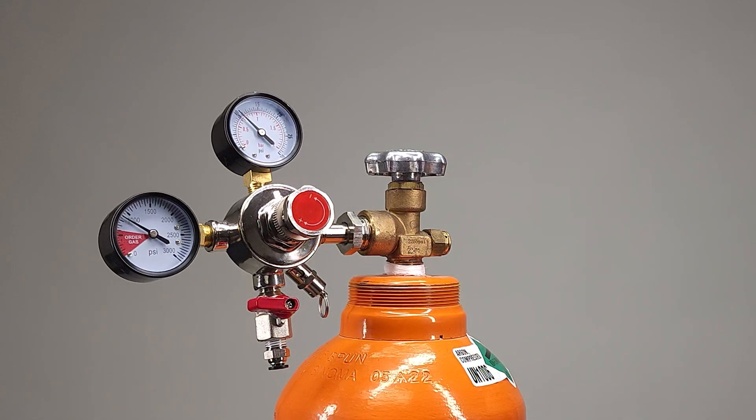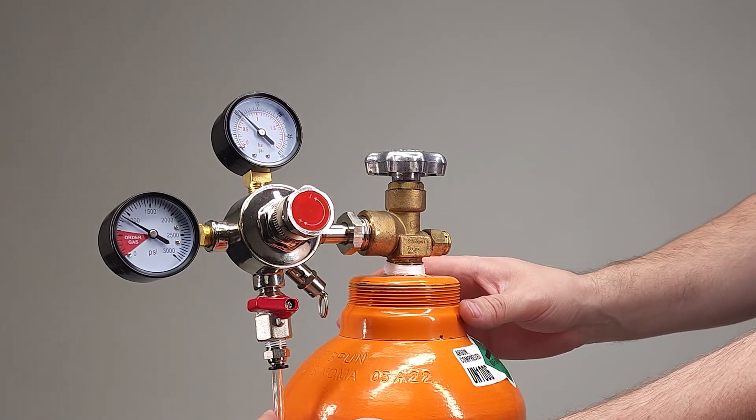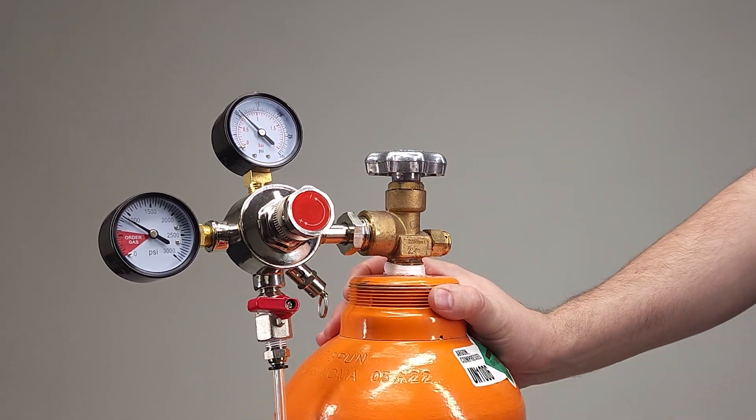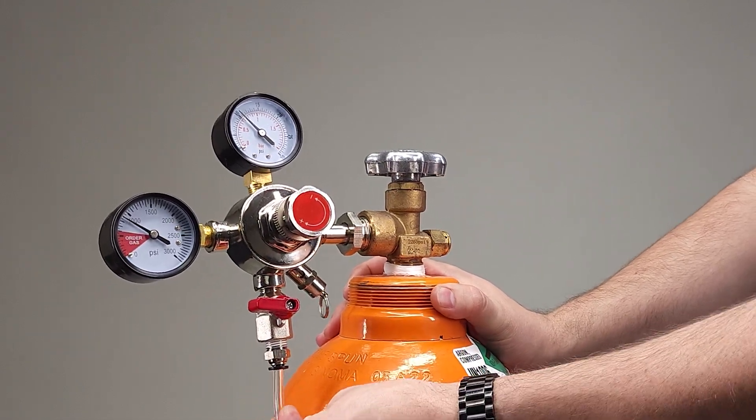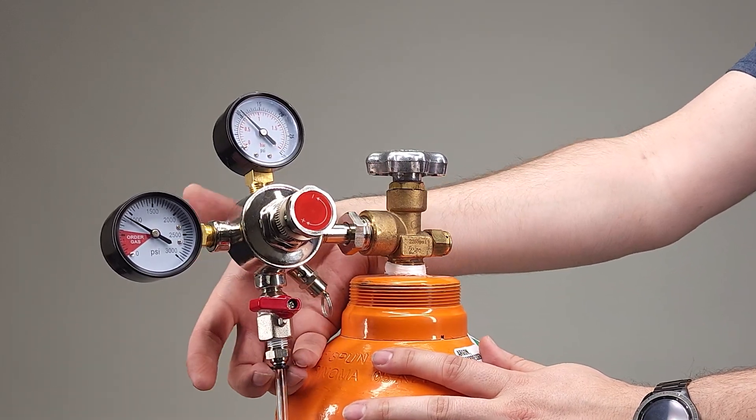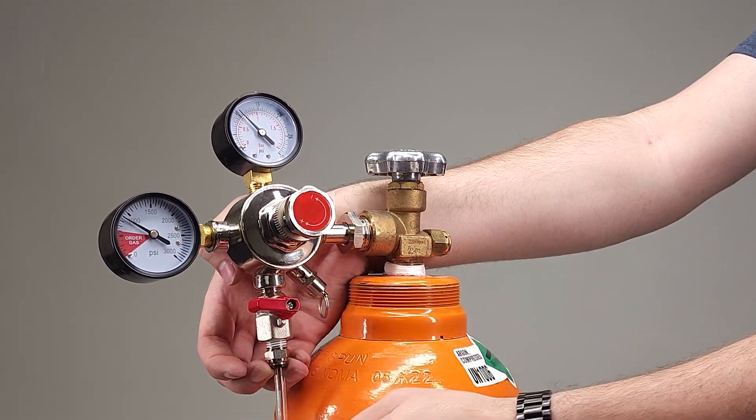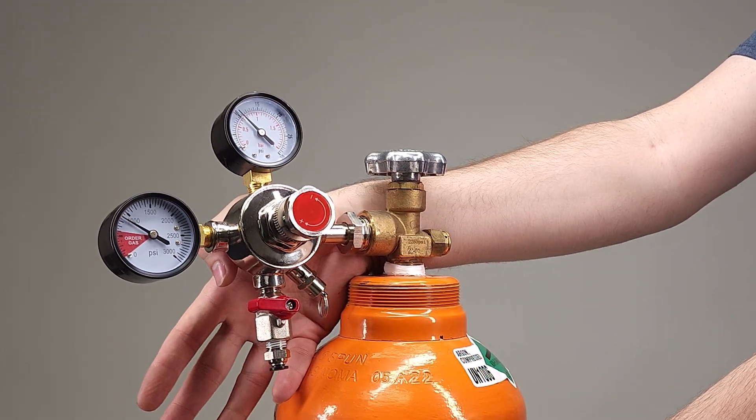Now if we want to utilize this gas, we can use the supplied argon tubing and place it into here. Now that should be tight enough that it won't come out. If you do need to remove this, we're going to touch the black pieces here, bring it towards the body of the machine, and then we can pull this free.